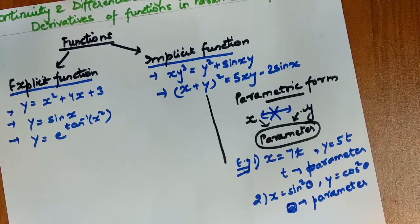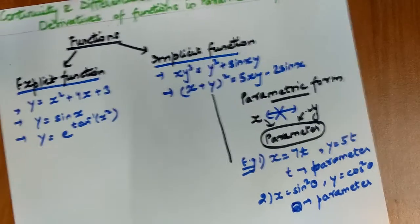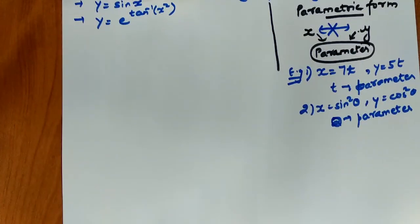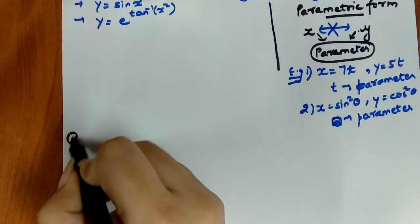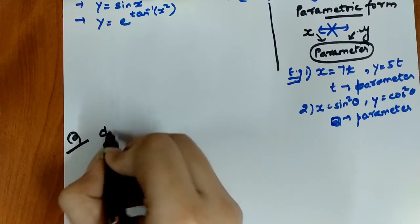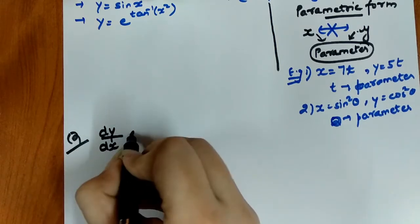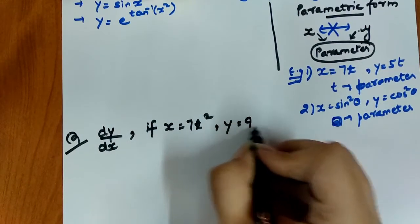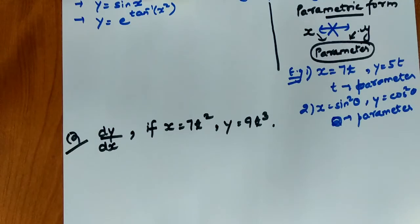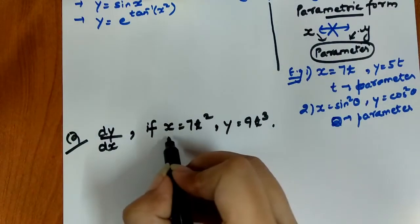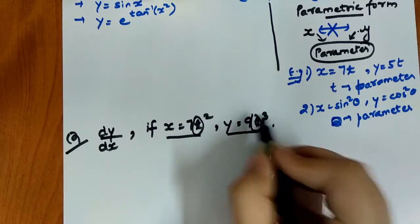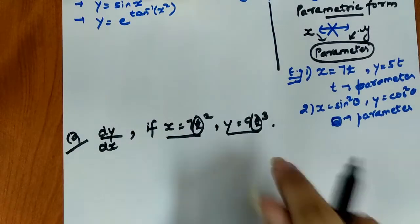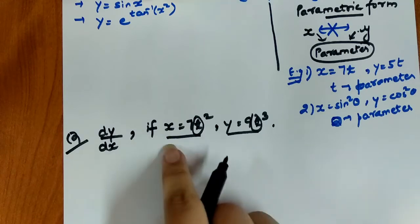Now we will understand how we find the derivative of the parametric form. Let's take an example. We have to find dy/dx where x = 7t² and y = 9t³. You can see that x is dependent on variable t and y is also dependent on variable t, so t is our parameter and this is our parametric form. We have to find dy/dx.